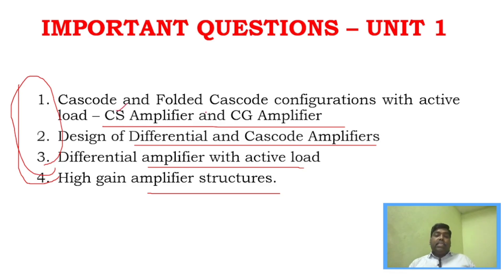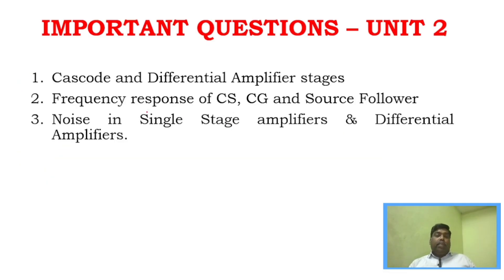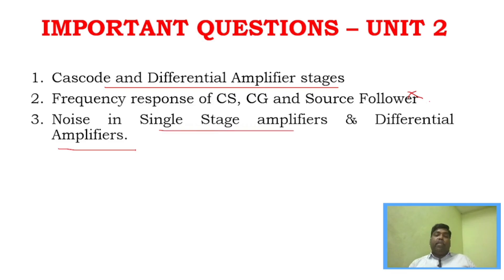In Unit 1 questions, either CS or CG — one of the two will definitely appear. For Unit 2, cascode and differential amplifier stages with frequency response is a very important question. Noise in single-stage and differential amplifiers combined is also a key question. Only three questions are given in Unit 2.